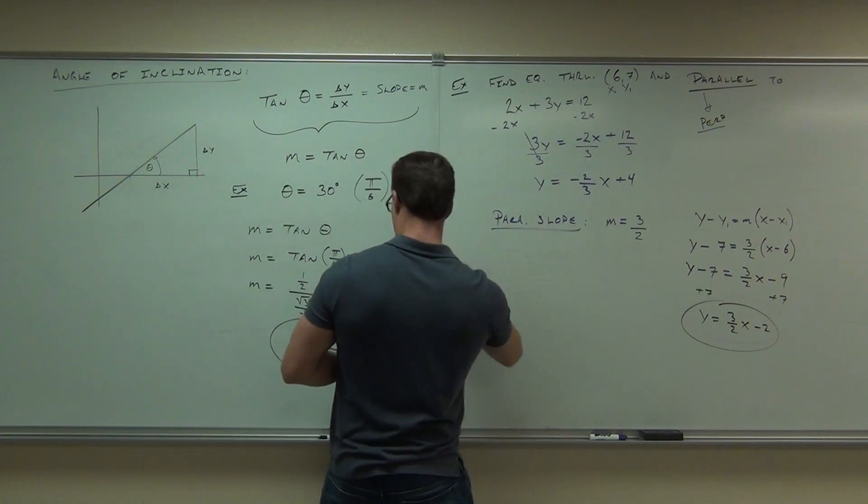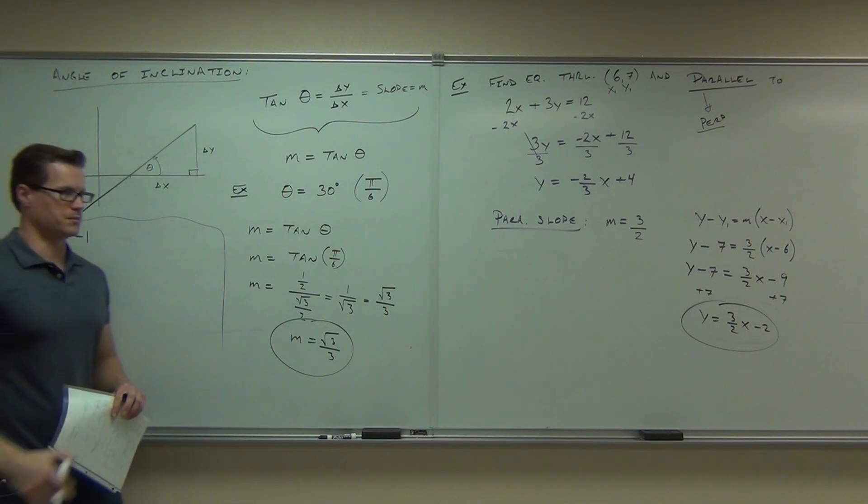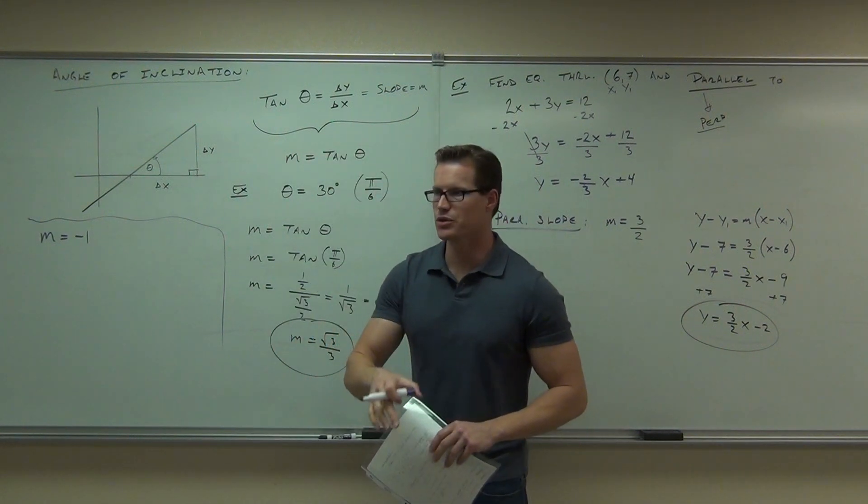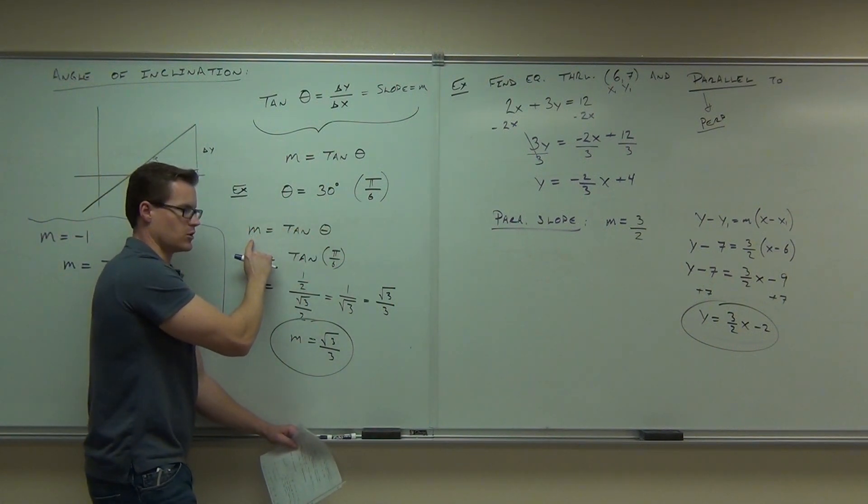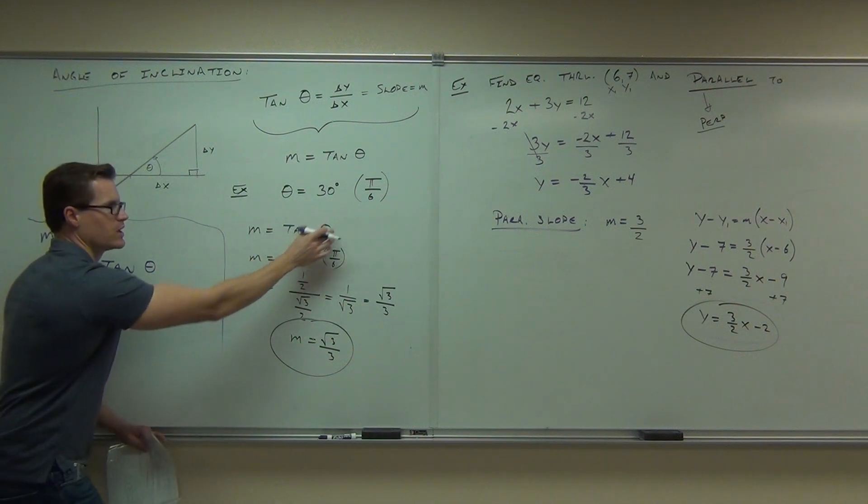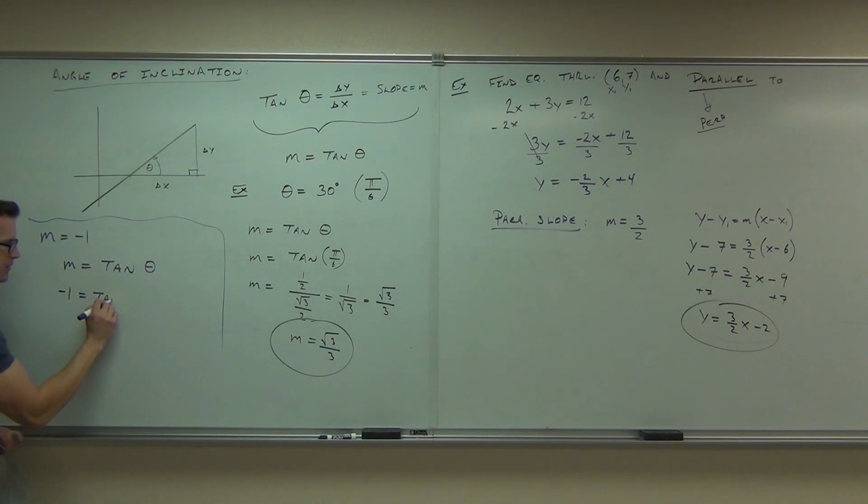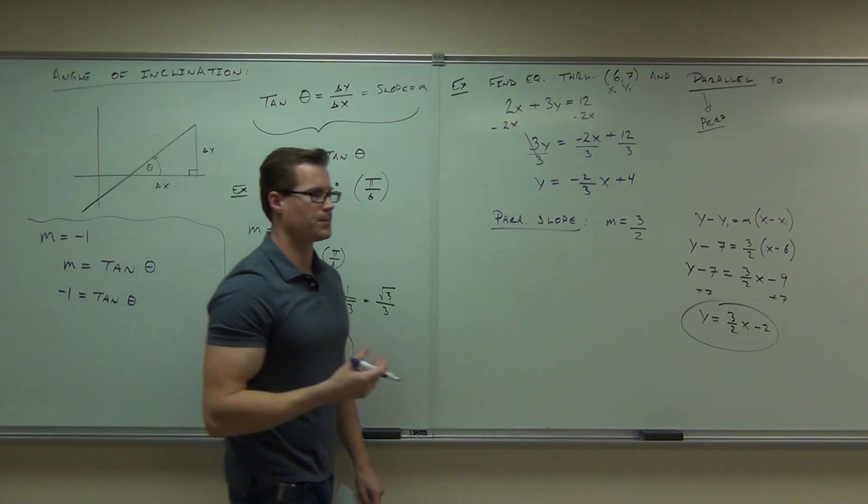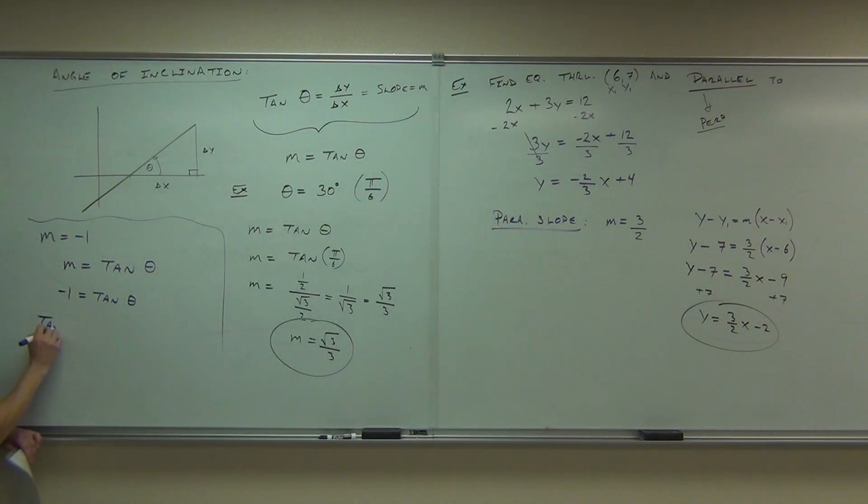What if I said, I have a slope of negative 1. Can I find the angle of inclination? We only have one equation. The only thing that we know is that the slope equals tan theta. Over here, we knew the theta, right? We were looking for the slope, the m. Over here, we know which one? We know the m. So notice we're using the same exact equation. Here, we knew our angle. Here, we know our m. We know negative 1 equals tan theta. How do we find theta? You could do tan inverse on both sides. We do tan inverse of negative 1 equals theta.